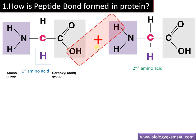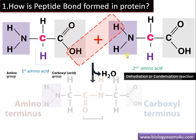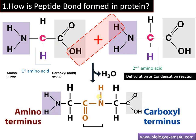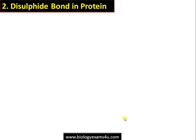H and OH combine to form water, which is removed — this is also called a dehydration or condensation reaction. The rest forms C=O–NH, which is the peptide bond that connects the two amino acids.